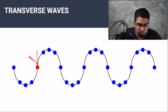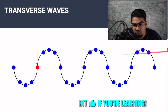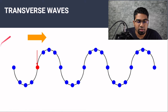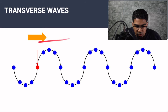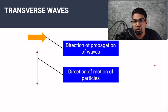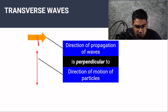So if we had an object floating on the water, the wave would not carry the object further away — the object would only move up and down. When we are talking about transverse waves, this is the direction of movement of the wave — we call it the direction of propagation of the wave. And this is the direction of motion of the particle. For transverse waves, the direction of propagation of waves is perpendicular to the direction of motion of particles. The angle formed between the two directions is 90 degrees.